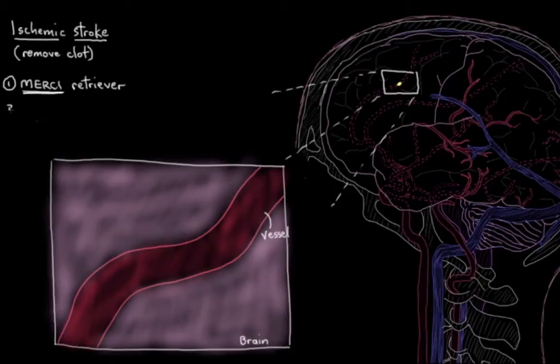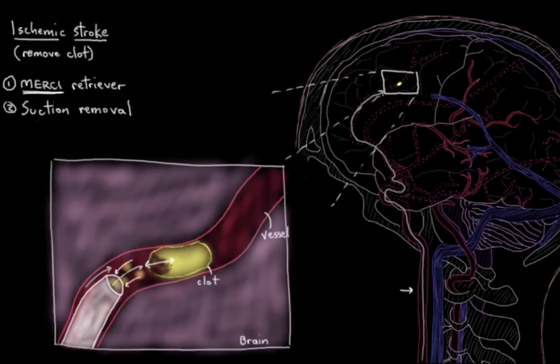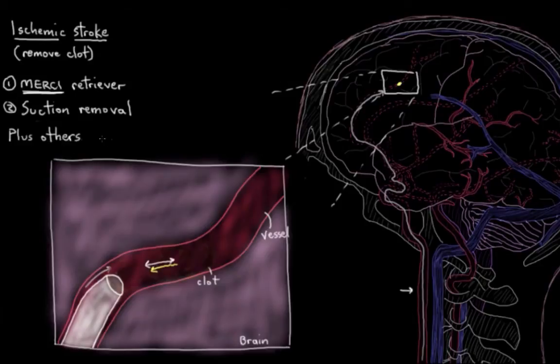Another way ischemic strokes can be treated surgically is with suction. A tube goes into the artery, and a wire is put through the tube and positioned right behind the clot. The tube then turns into a little vacuum cleaner and starts to suck in. While it's sucking, a wire gets pushed back and forth through the clot to break it up. All the pieces and eventually the whole clot get sucked into the vacuum. There are a few other variations on these procedures for clot removal, some using mesh tubes called stents with different mechanisms.